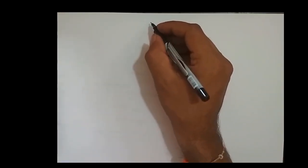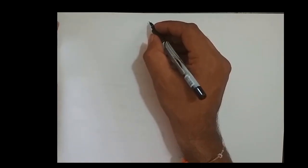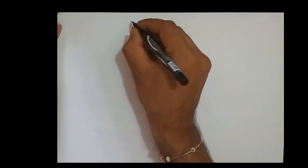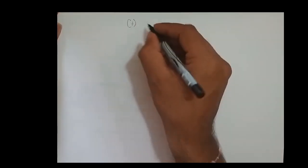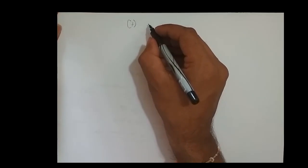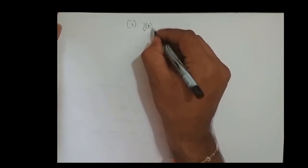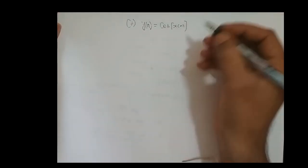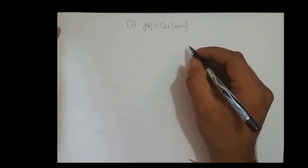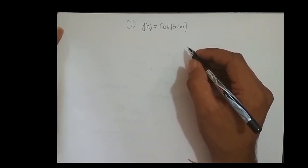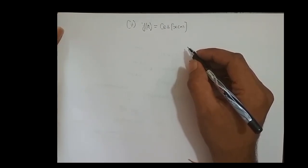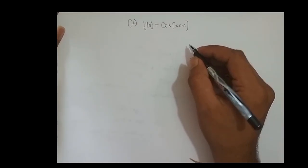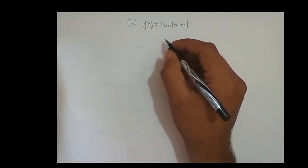We will take up one more problem on the linearity property of a system, but this time we will consider a discrete time system: y of n is equal to cos of x of n. Whether it is a continuous time system or discrete time system, the concept is the same. First we have to get the desired output of a linear system, and then we have to get the system output. If both are the same, the system is linear; otherwise the system is non-linear.